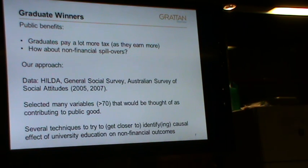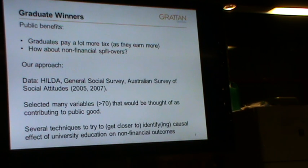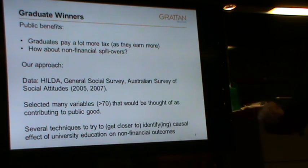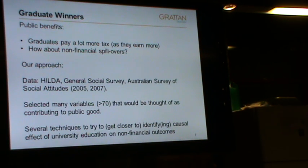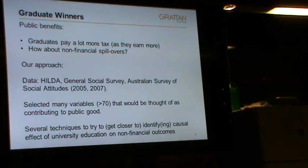And there's the Australian Survey of Social Attitudes — not such a good survey in terms of data quality since it's postal, but they ask really interesting questions like how do you feel about the Lebanese, which is interesting from a public good perspective. From these surveys we look at dependent variables — we chose about 70 which may constitute a non-financial benefit, everything from life satisfaction to how do you find the Vietnamese, how much do you volunteer, care for the elderly, all these sorts of things.